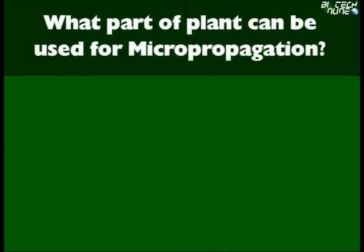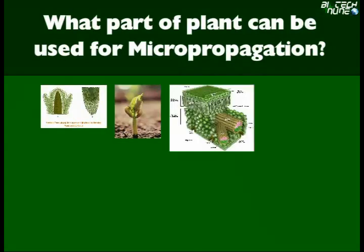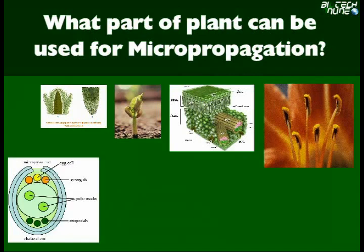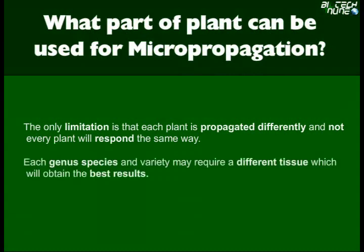What part of a plant can be used for micropropagation? Meristems, shoot and root tips, leaf tissue, anthers, embryos, and flowers — virtually all parts of a plant can be used. The only limitation is that each plant is propagated differently and not every plant will respond the same way. Each genus, species, and variety may require a different tissue to obtain the best results.